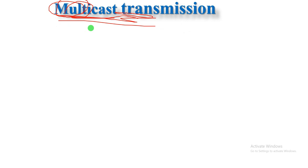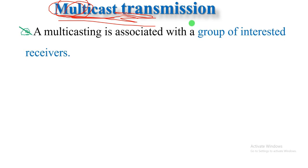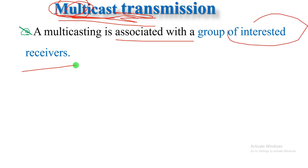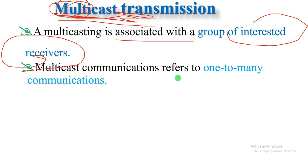In multicasting, the infrastructure is a group of interested receivers. There is a group which shares the same address. Data is simultaneously transferred to all members of the group. A multicasting communication refers to one-to-many communication when the interface is one-to-many.